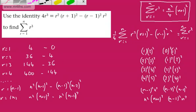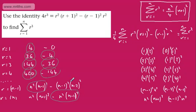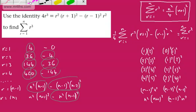All of the middle terms drop out. Summing everything up: 4 minus 4 is zero, 36 minus 36 is zero, 144 minus 144 is zero, and each term cancels with the one below or above it. All we are left with is the first and last surviving terms.